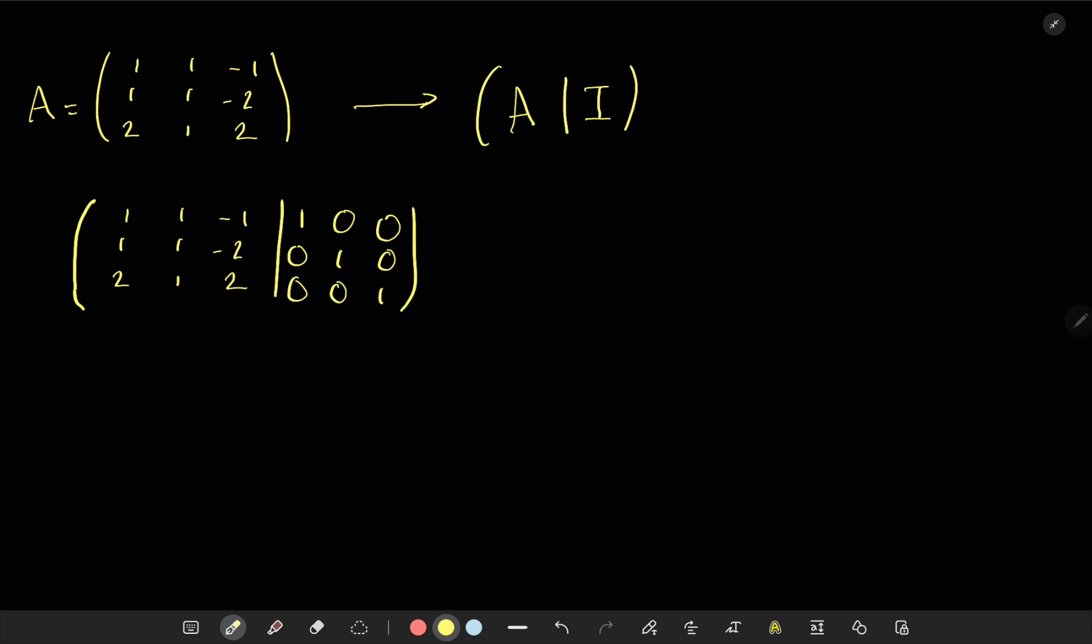If my matrix were 4 by 4, I would just add the 4 by 4 identity to the right of it. And now I want to do Gaussian elimination, as we did in the previous video, in the previous section.